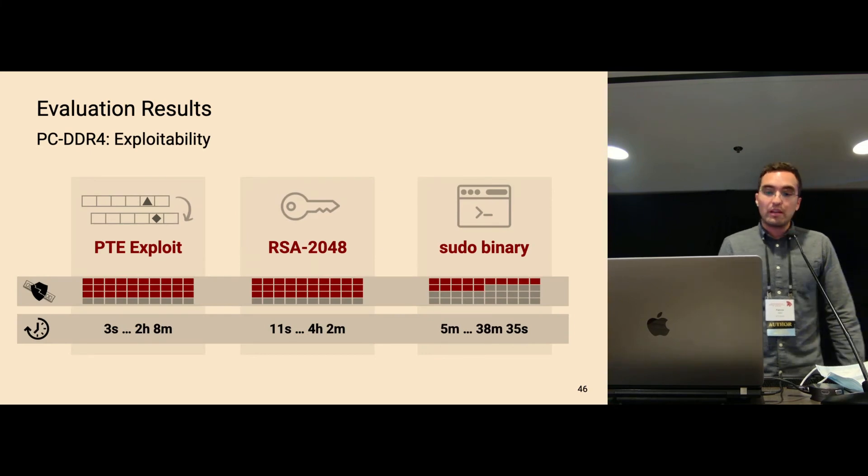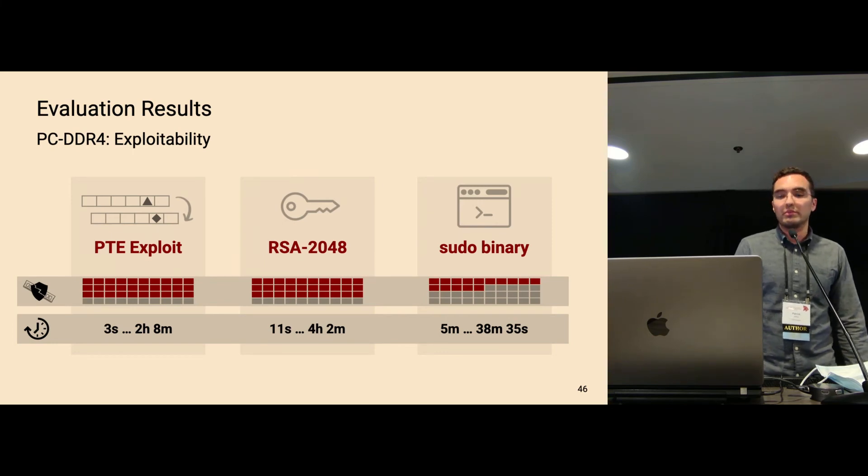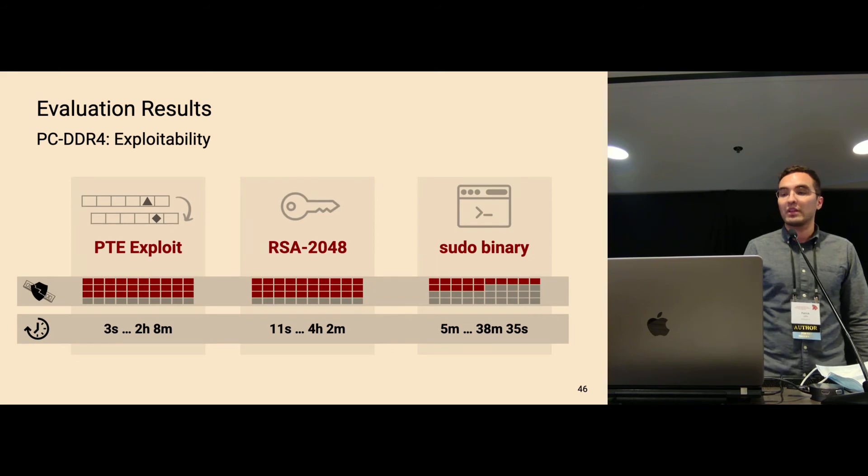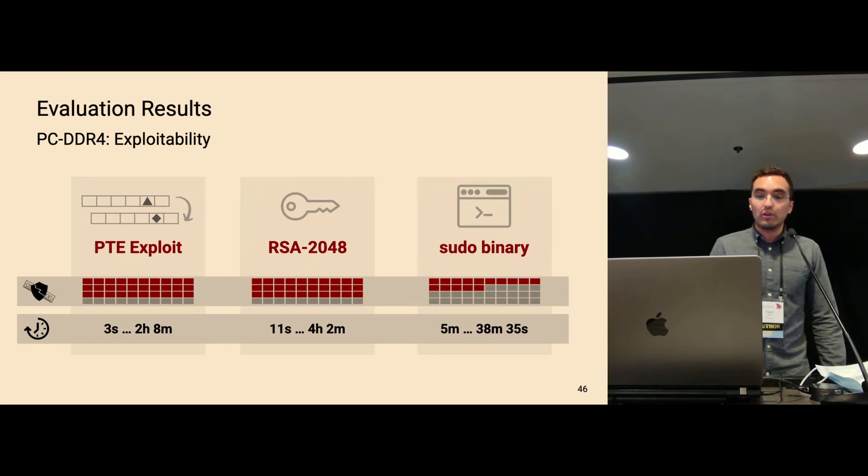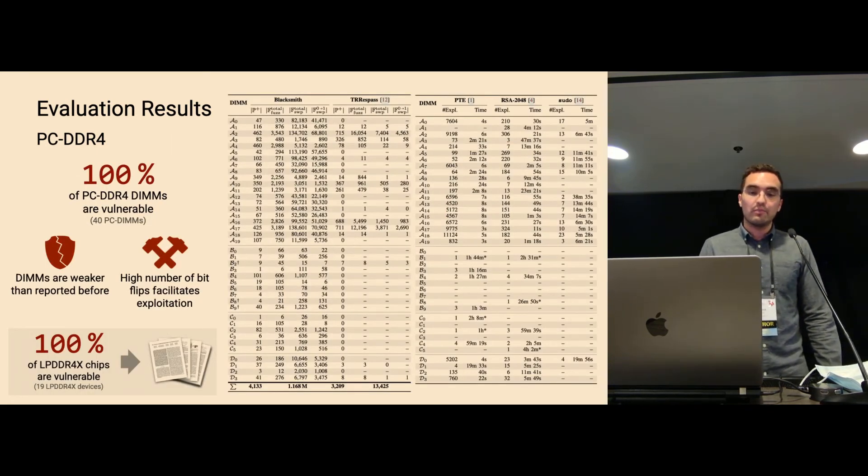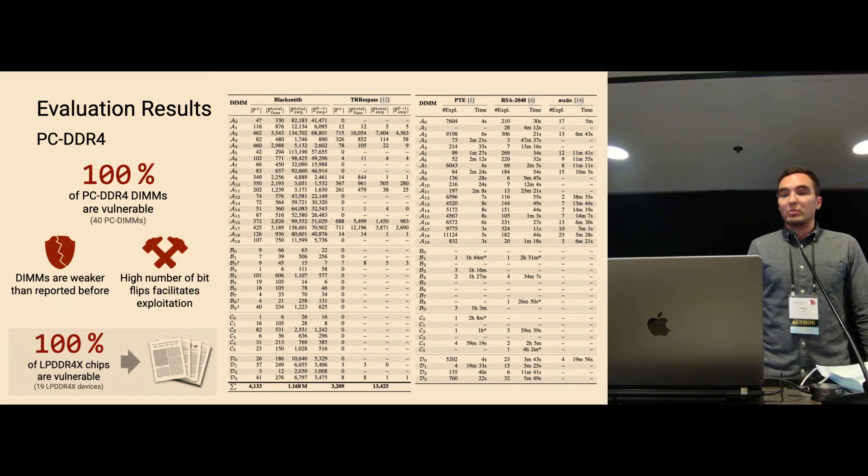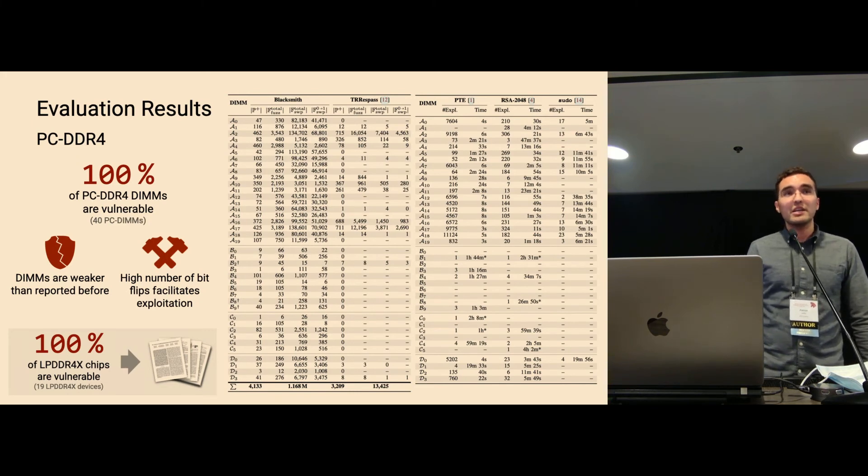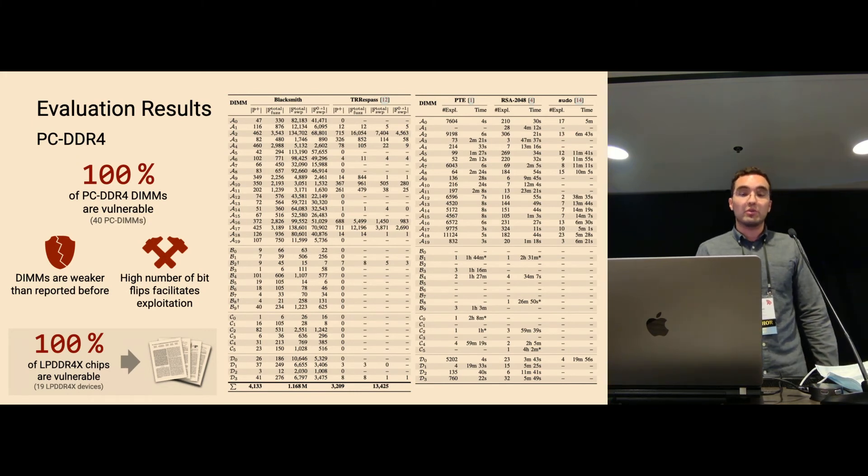That's why we also looked into existing Rowhammer exploits. So in our paper, we analyzed three exploits. The PTE exploit worked on 30 of 40 devices, and we found exploitable bit flips in between three seconds and two hours and eight minutes. For details on the other attacks that we also looked into, I kindly refer you to the paper. And to conclude the PC evaluation, so 100% of all devices in our test pool are broken, and the DIMMs are weaker than reported before. The high number of bit flips facilitates the exploitation.